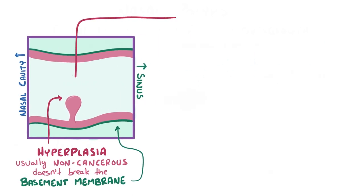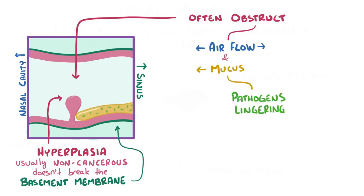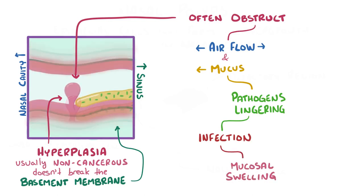Unfortunately, they often obstruct airflow as well as mucus drainage, which allows pathogens to linger in the sinuses and cause infections. Recurrent infections cause mucosal swelling as immune cells infiltrate the tissue and create an inflammatory response. This swelling makes airway obstruction and mucus drainage even worse.